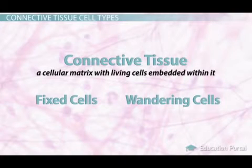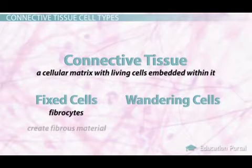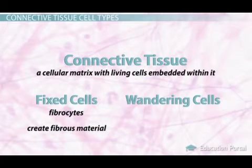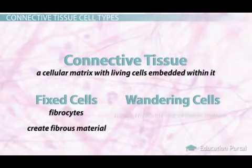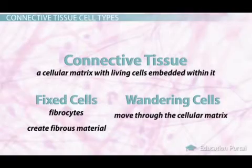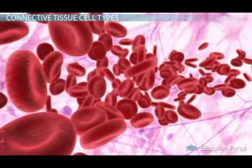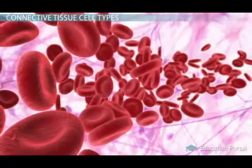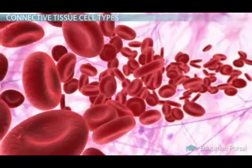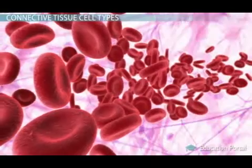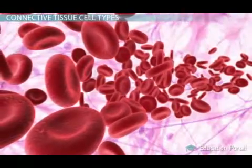Fixed cells don't move. The most common type is called a fibrocyte. Fixed cells create fibrous material, or the matrix of some connective tissues. Wandering cells move through the cellular matrix. Our blood is a connective tissue, and the individual components that make up blood — red blood cells, white blood cells, and platelets — are perfect examples of wandering cells.